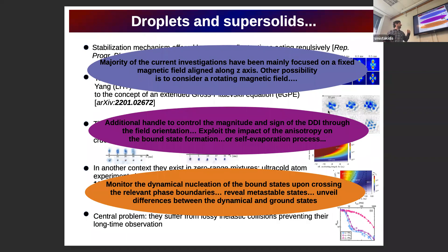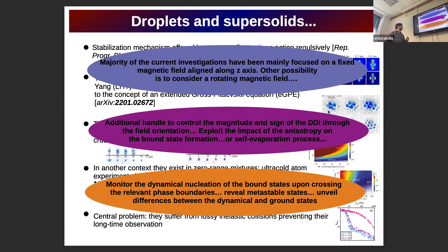In order to pass from one phase to the other, one has to use Feshbach resonances for tuning the S-wave interaction. However, there is another possibility, and this is to consider a rotating magnetic field, which essentially provides an additional means to manipulate both the magnitude and the sign of the dipolar interactions. This can be very fruitful in order to exploit the anisotropy of the dipolar interactions to cross from one phase to another, to create different phases, and it will affect the bound state formation, the self-evaporation process, and enable monitoring the dynamical nucleation of these structures.